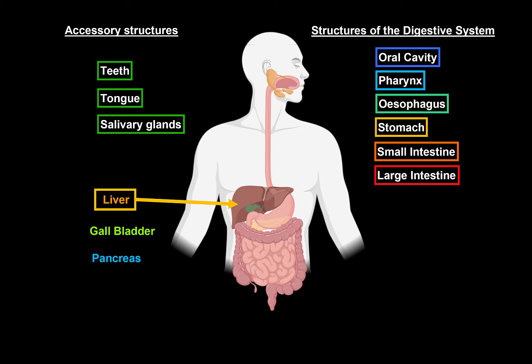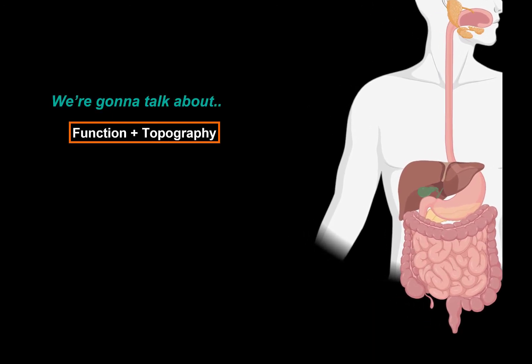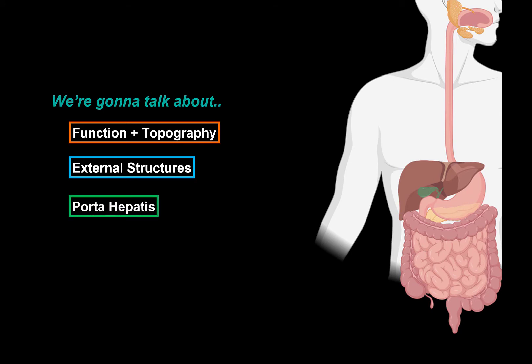Our aim in this video is to understand the complete anatomy and the orientation of the liver. To do that, we're first going to cover the functions and the topography of the liver. Then we're going to look at the external structures of the liver by going through the lobes, margins, and the grooves on the surface. And then we're going to talk about the porta hepatis, along with how the liver is fixated — basically going through the coverings and the ligaments you'll find around the liver.